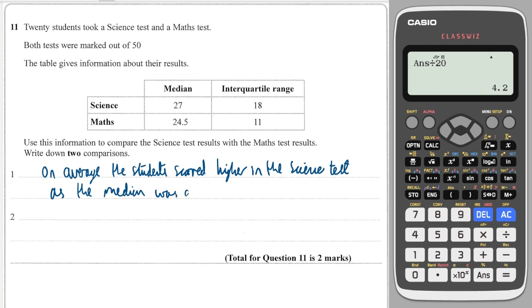So median is an average. It's a way of comparing how well people have done or how high the numbers are. Whereas the interquartile range is a spread. It tells you how spread out the data is.